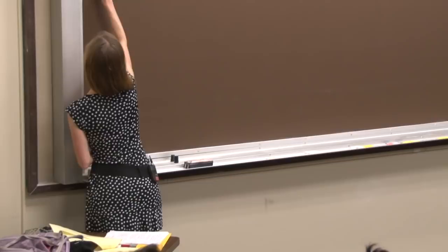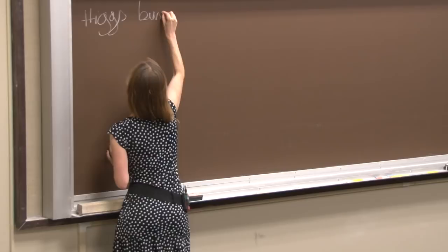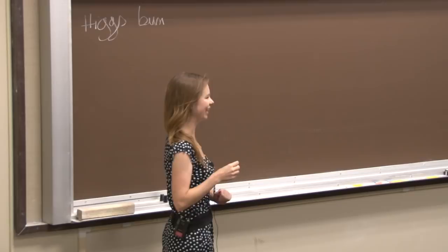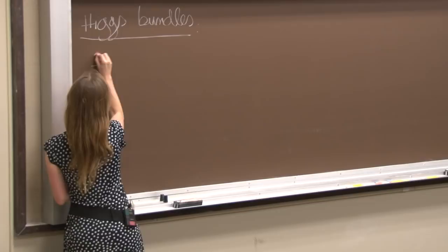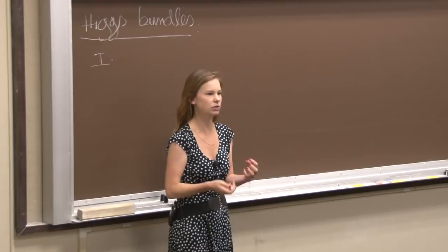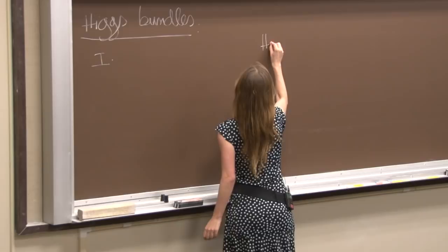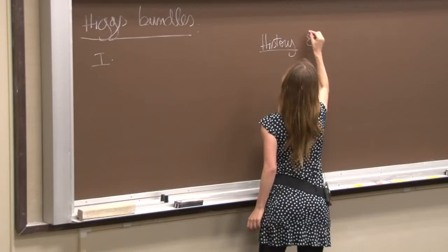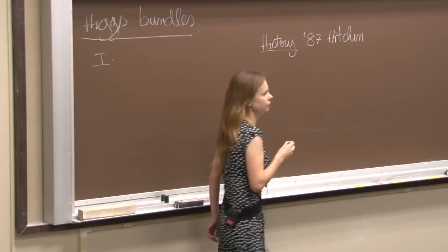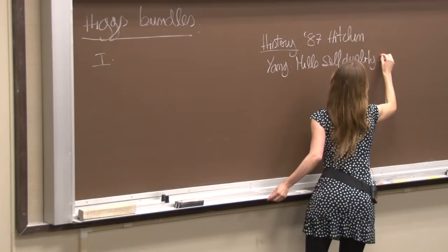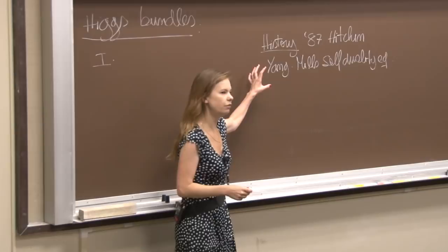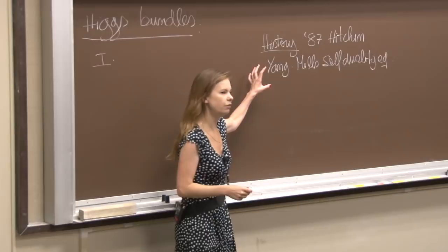So let me put here the plan for today in our Higgs bundles mini-course. There are many ways in which you can start approaching Higgs bundles. Higgs bundles were introduced in 1987 by Nigel Hitchin. Back in 1987, Hitchin was looking at something called the self-duality equations — Yang-Mills self-duality equations. He saw that these equations are for connections originally on a four-manifold. If you reduce them to two dimensions, what you get are objects defined on a Riemann surface, and those are Higgs bundles.